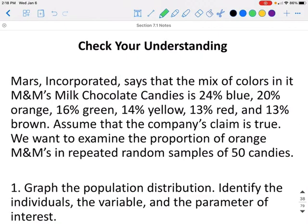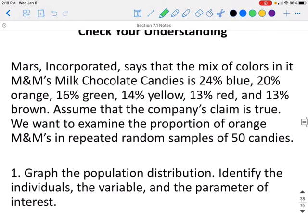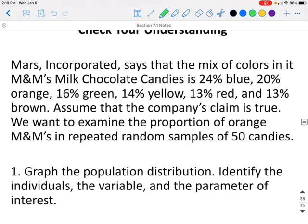Let's check our understanding. The Mars Incorporated Company says that the mix of colors in M&M's milk chocolate candies is 25% blue, 20% orange, 16% green, 14% yellow, 13% red, and 13% brown. Assume that the company's claim is true. We want to examine the proportion of orange candies in repeated random samples of 50 candies.